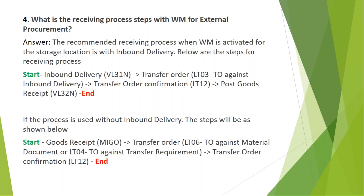Once the materials are reached to the bin, they are placed and the transfer order is confirmed. The TO confirmation indicates that the materials received have been placed in the suggested destination storage bin. Once physical placement is complete, we do the TO confirmation in the system. After TO confirmation, we do the goods receipt using VL32M — either manually, via auto GR configuration, or a background job. The process is initiated with a WM transaction and ends with the IM transaction VL32M.